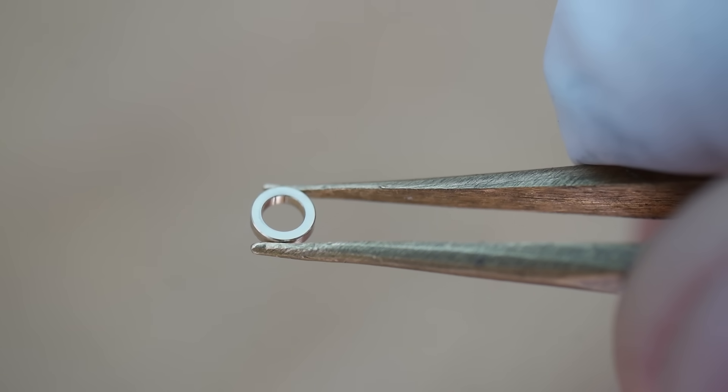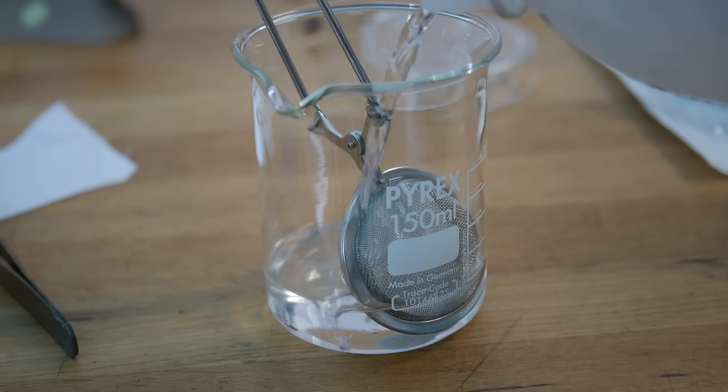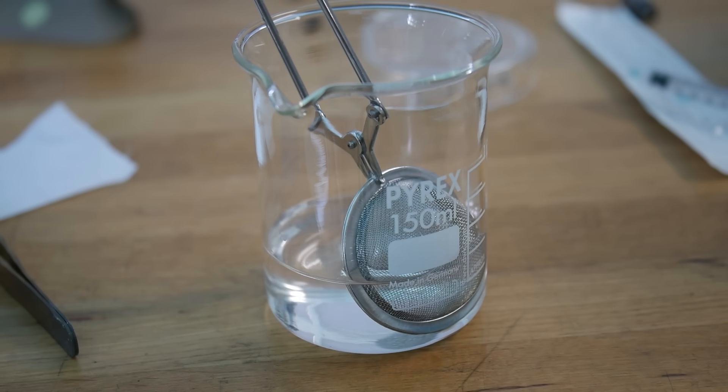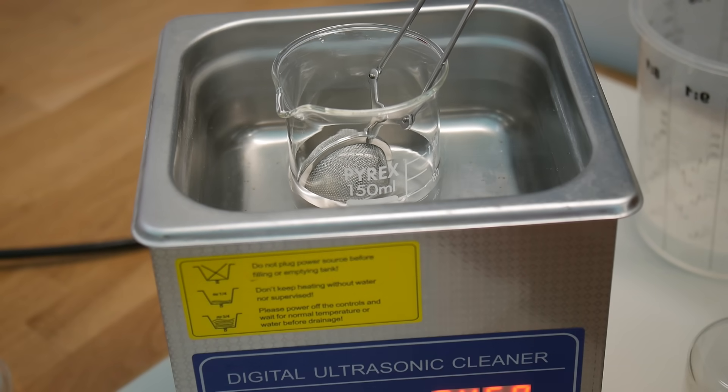As with all the components after polishing, I clean off any excess polishing compound in IPA, using an ultrasonic cleaner. These tea infusion baskets work nicely for holding small parts in the solvent.